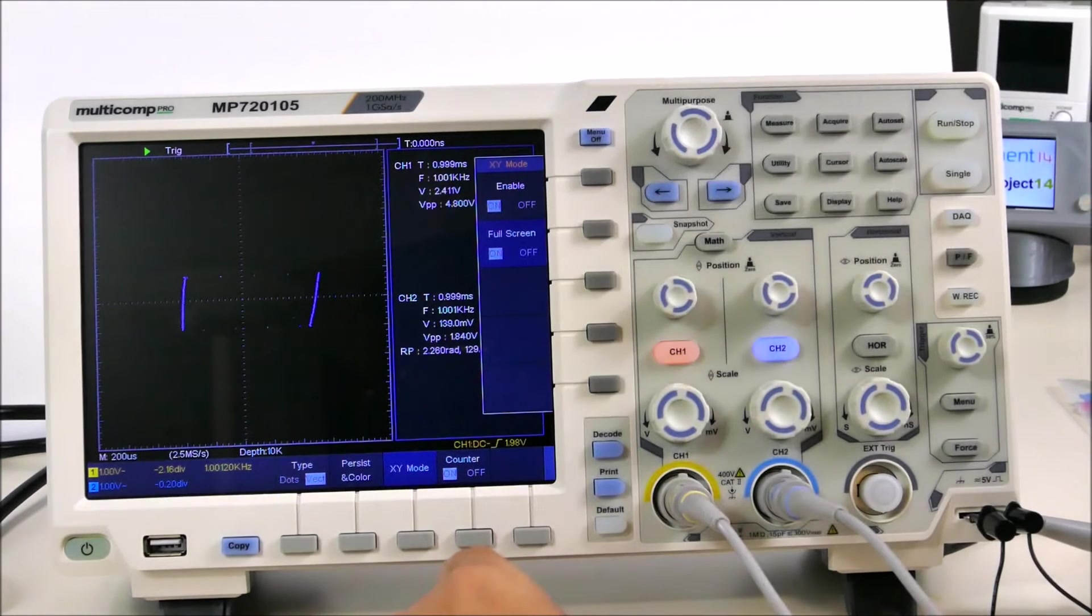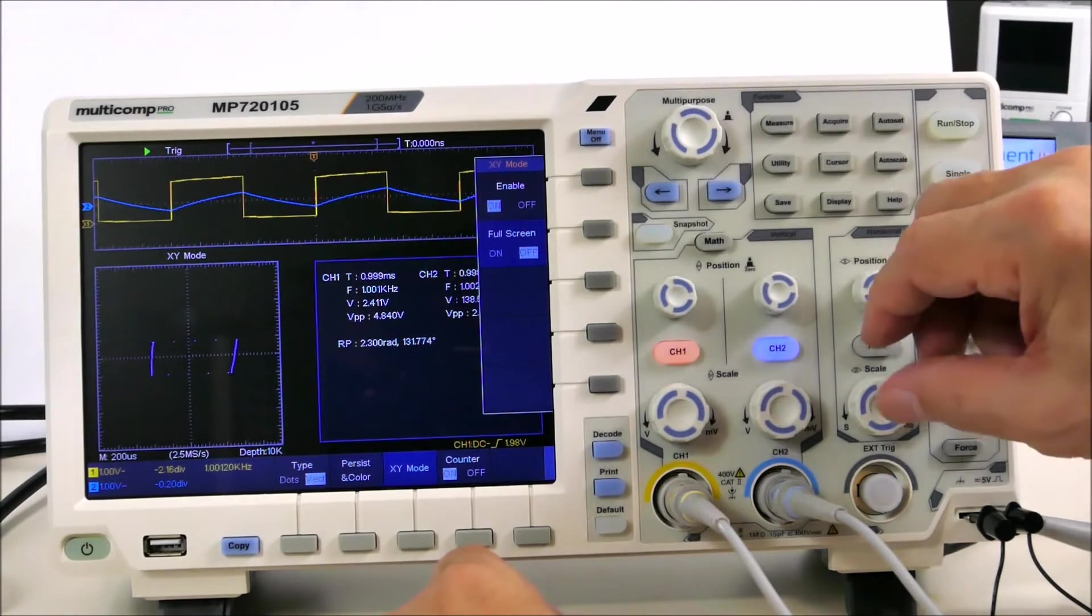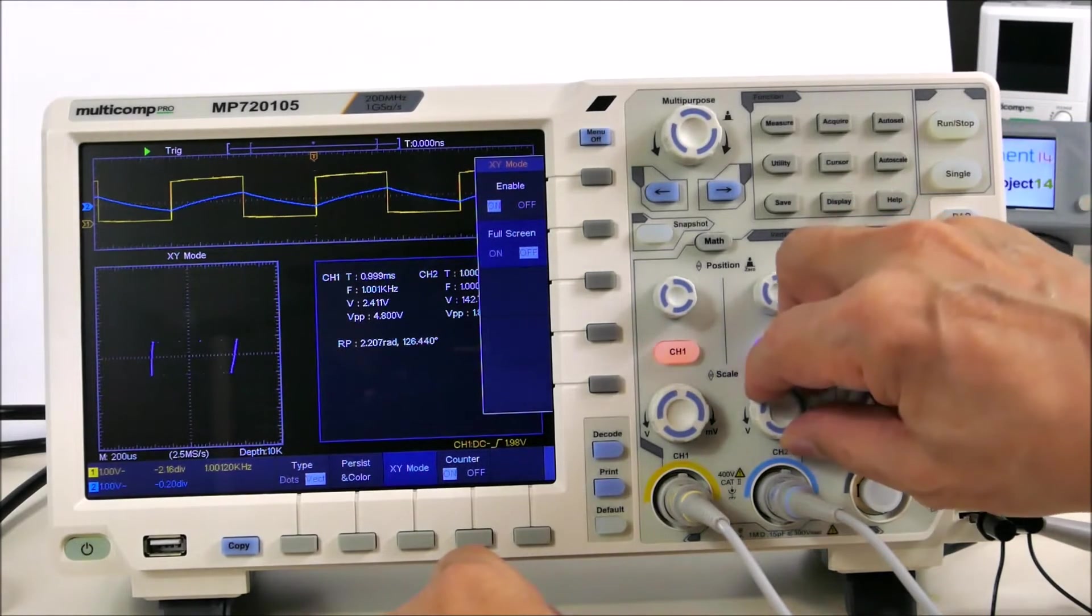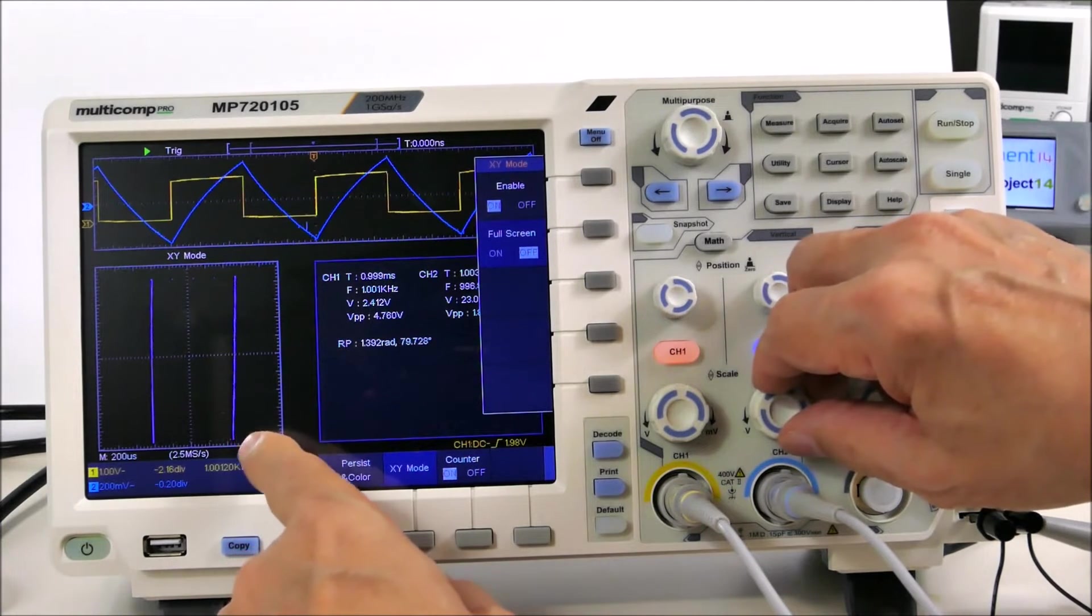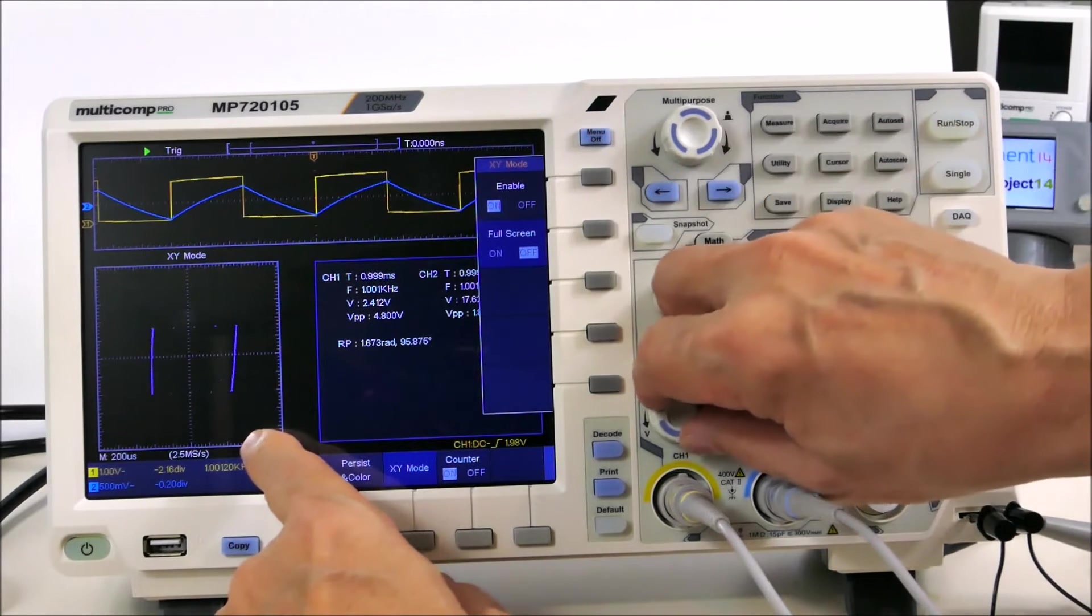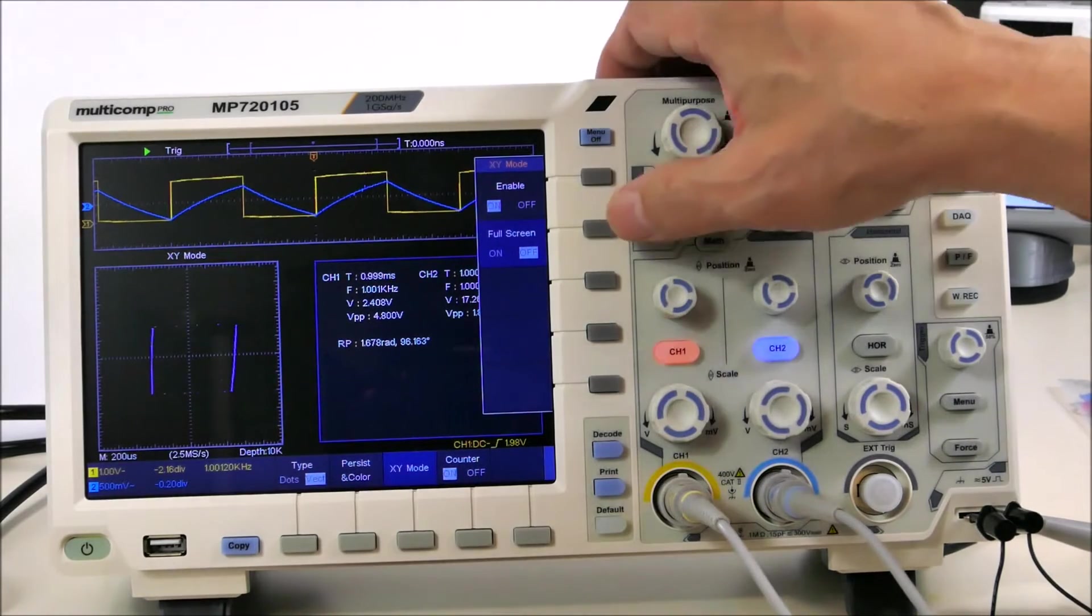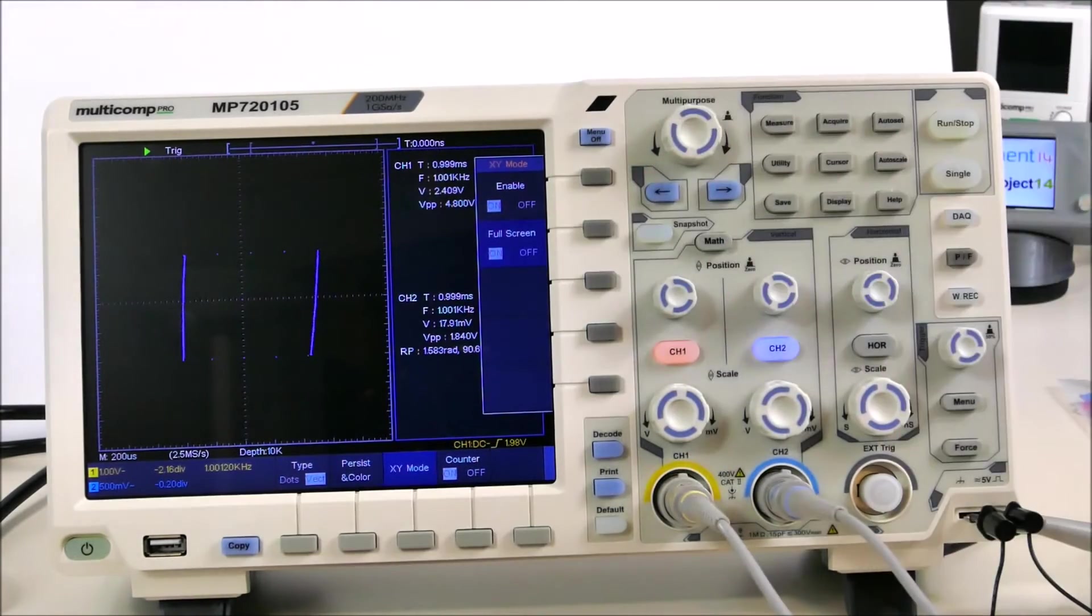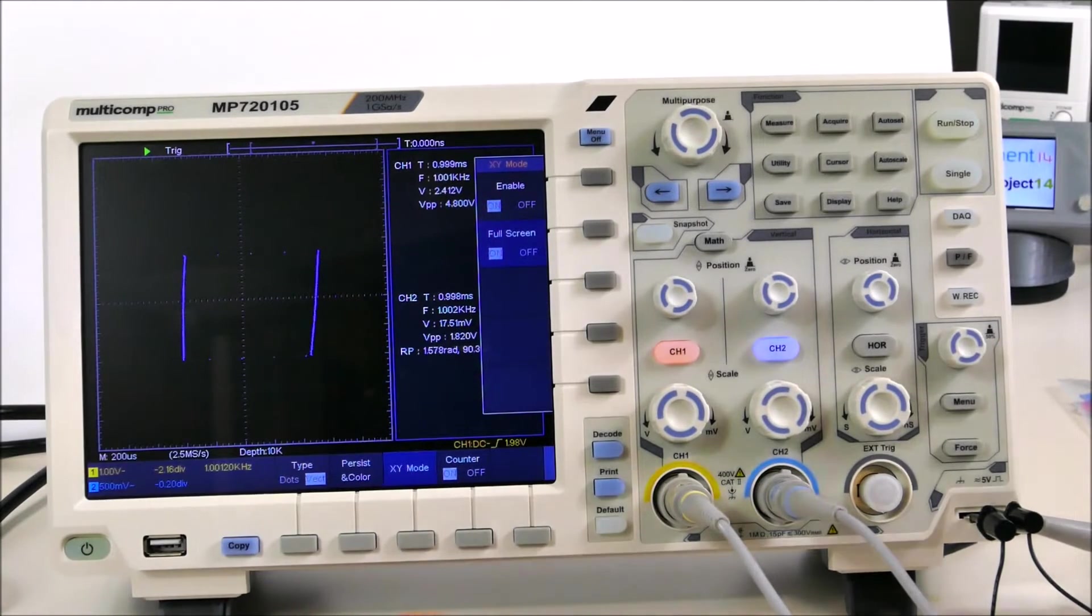If I turn that off we can see here that if we adjust the scale here, the box gets bigger. But this is an interesting feature for a scope of this type. It just allows us to do some interesting XY plotting.